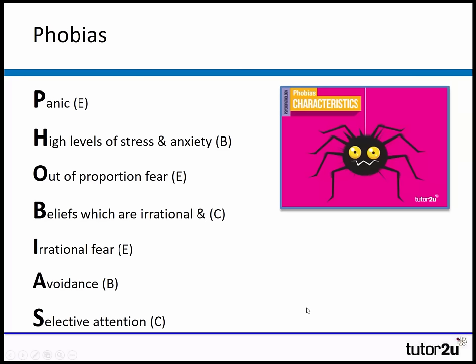Moving on to phobias. A different way to help you remember the cognitive, behavioural, and emotional characteristics of phobias: if you spell the word P-H-O-B-I-A-S out, each letter represents one of the key ideas.